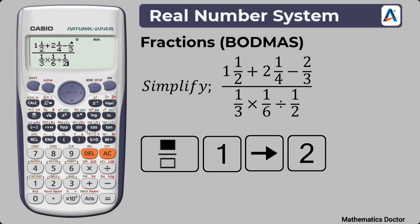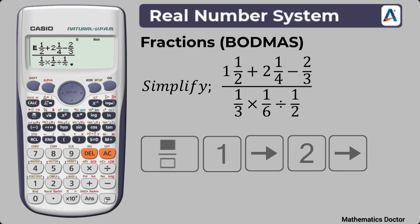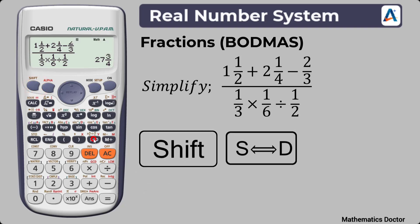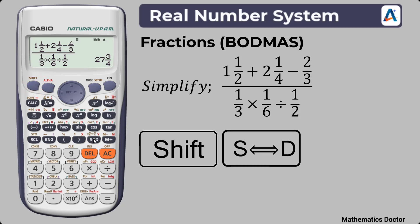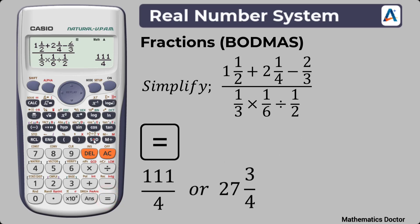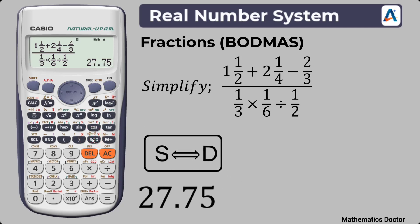Check the screen carefully to make sure everything is intact — you can scroll up to verify the numerator question. Then press the equals sign to get the final answer, which displays as 111 over 4. Since this is an improper fraction, press Shift and then SD to convert it to the mixed fraction form: 27 whole number 3 over 4. If you want the decimal form, press SD without Shift and it will give you 27.75.